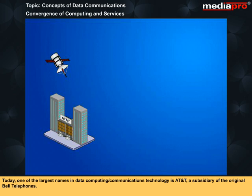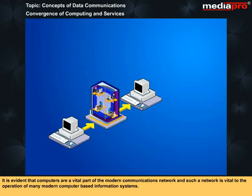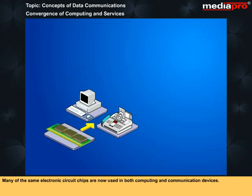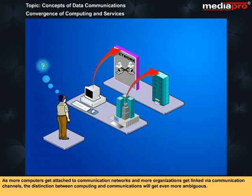Today, one of the largest names in data computing and communications technology is AT&T, a subsidiary of the original Bell Telephones. It is evident that computers are a vital part of the modern communications network, and such a network is vital to the operation of many modern computer-based information systems. Many of the same electronic circuit chips are now used in both computing and communication devices.